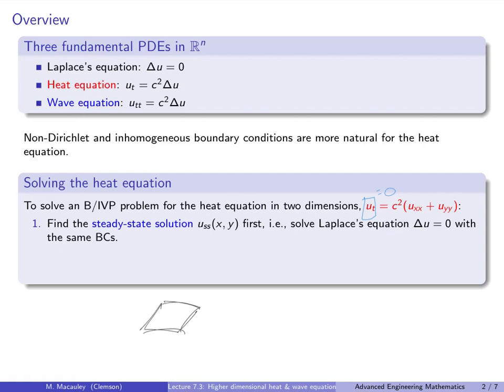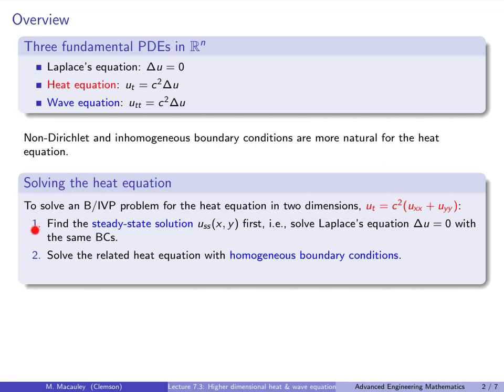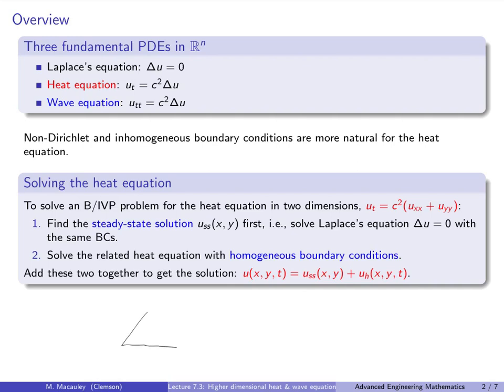Think about when we solved ODEs: if the equation is homogeneous, zero is a particular solution, but you just skip this step and solve it. The second step, or the first step if you skip the steady state, is to solve the related heat equation with homogeneous boundary conditions. Then we add these two functions together to get the final solution: u(x, y, t) equals the steady state solution of x and y plus the solution to the related equation with homogeneous boundary conditions.